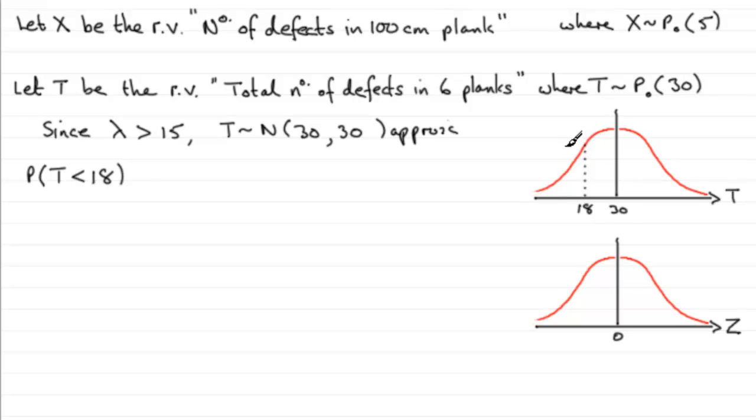Essentially what we've got to think of is a bar in here of width one unit. Now we want to be less than 18, so we want the area to the left of the 18, this area in here. But because we're going to be less than 18, we don't want to go into the bar, we just go up to this edge. And this edge here is at 17.5. Remember the bar is of one unit width.